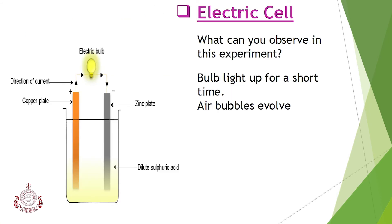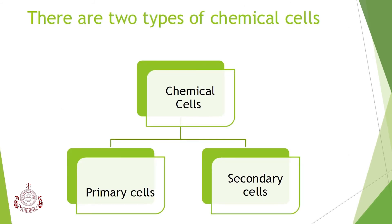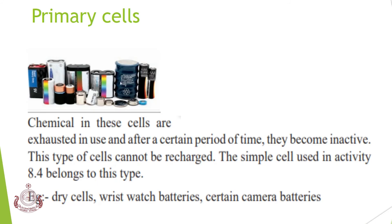In this experiment, the bulb lights up for a short time and air bubbles evolve. There are two types of chemical cells: primary cells and secondary cells. You can see some pictures of primary cells. The chemicals in these cells are exhausted in use, and after a certain period of time they become inactive.